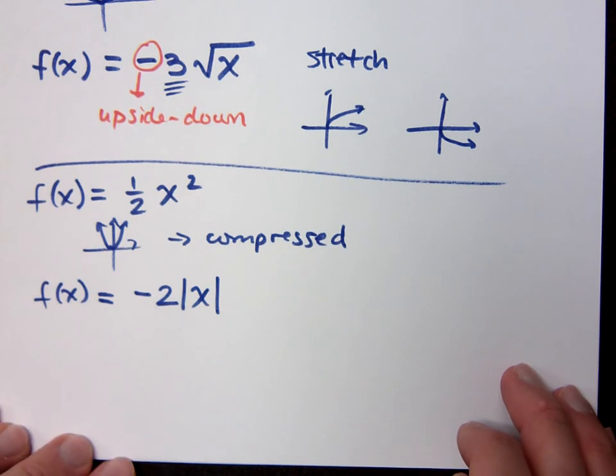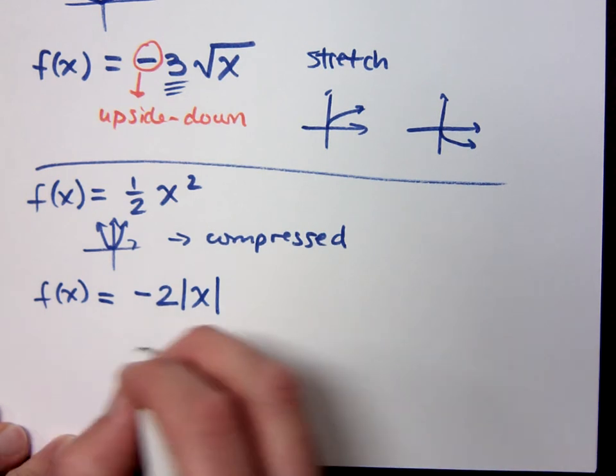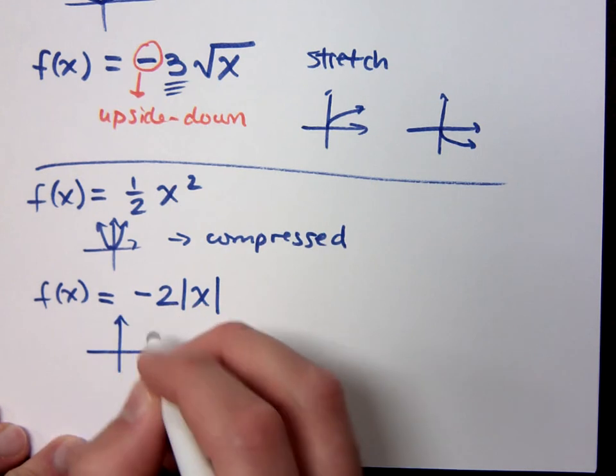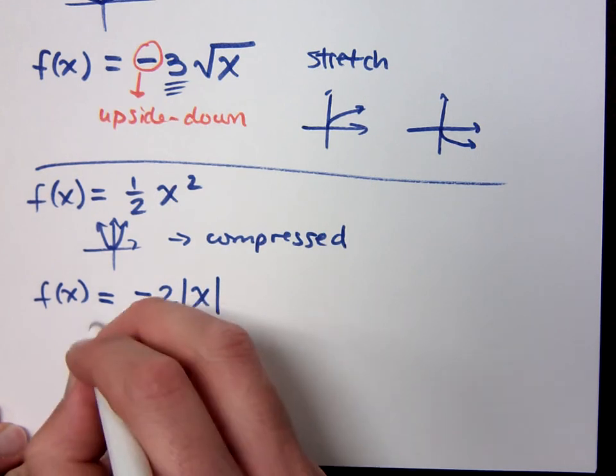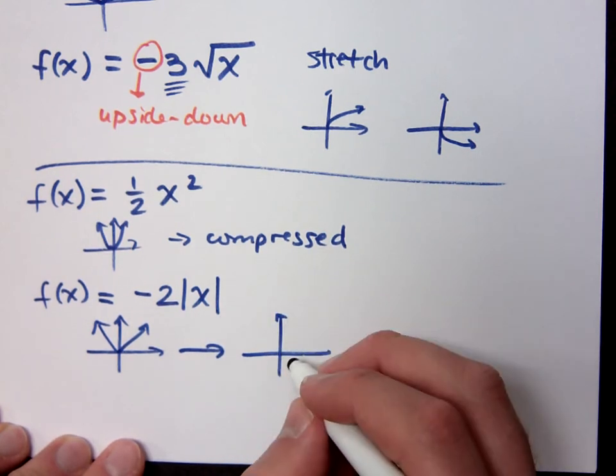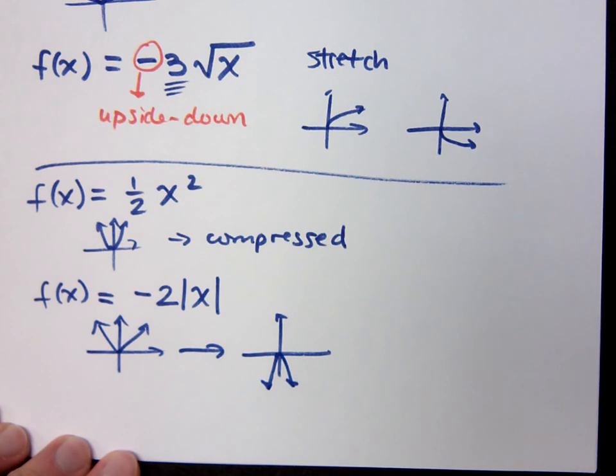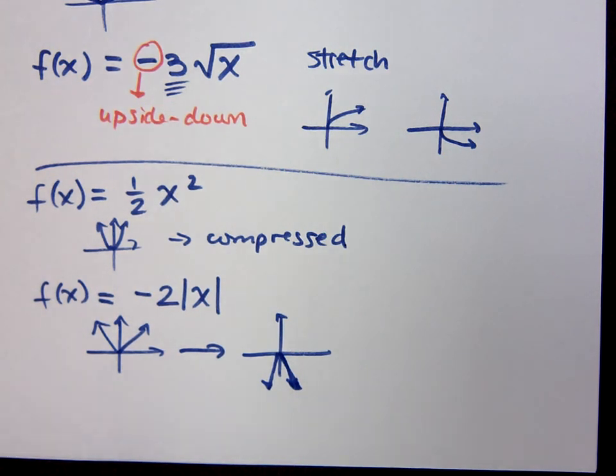Welcome back. Negative two times the absolute value of x. What's the shape for the absolute value of x? Well, the normal shape is a V, right? But, it's going to be turned upside down and it's going to be even steeper, right? So, now it's time to put our money where our mouth is. Let's see what the graphs really look like.